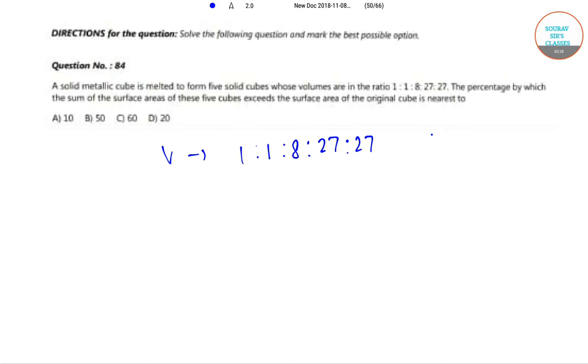The percentage by which the sum of the surface areas of these 5 cubes exceeds the surface area of the original cube is nearest to. So if we take into account the ratio of the bigger cube, we will get the ratio, which is the sum of all these is 64.